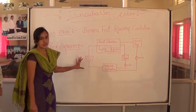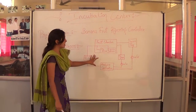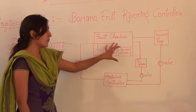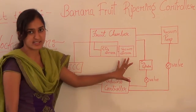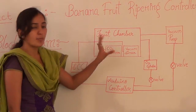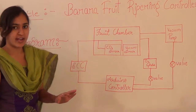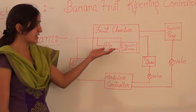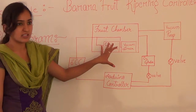This is the block diagram of the Banana E-Ripening Controller. We will place the banana in the fruit chamber. Parallelly, we will place carbon dioxide in the chamber. Banana produces ethylene and carbon dioxide. When carbon dioxide comes in contact with ethylene, the ripening process starts.